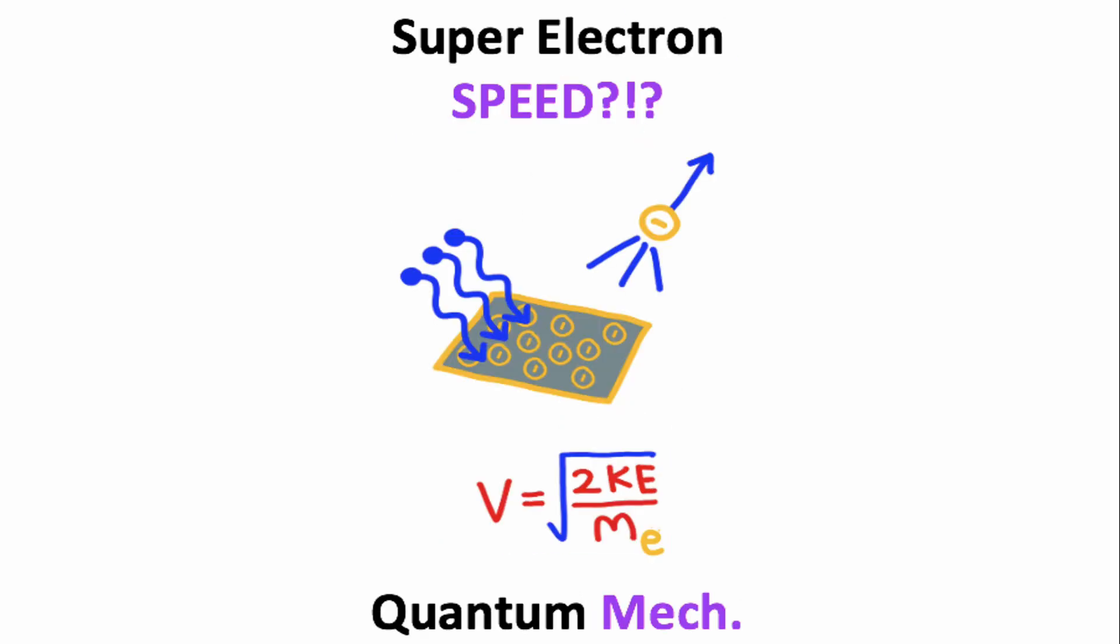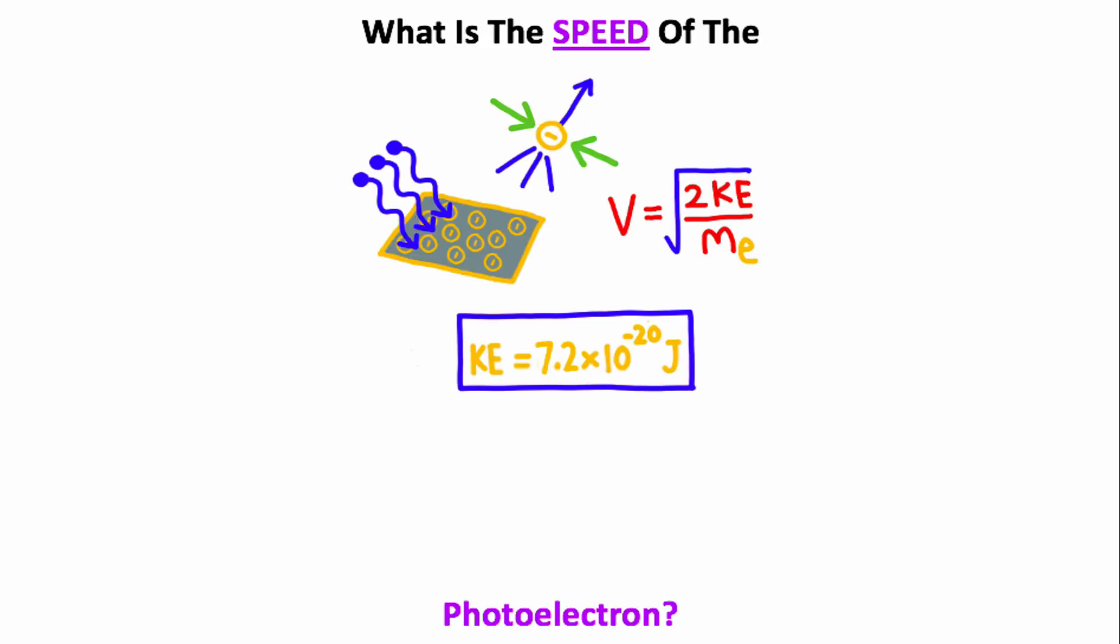This equation right here will give you the speed of a photoelectron, which is a quantum particle formed from the photoelectric effect. If the kinetic energy for this photoelectron is 7.2 times 10 to the negative 20 joules, what is the speed of the photoelectron? So to solve this problem, let's use this equation. So we have that the speed of the photoelectron is going to be the square root of 2 multiplied by the kinetic energy, which is given to us as 7.2 times 10 to the negative 20 joules.